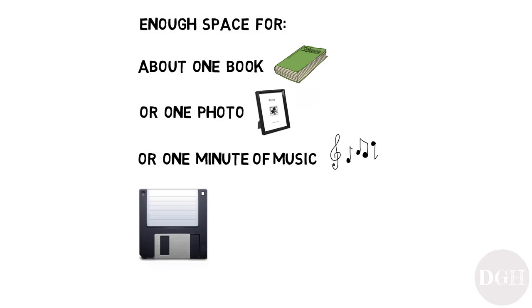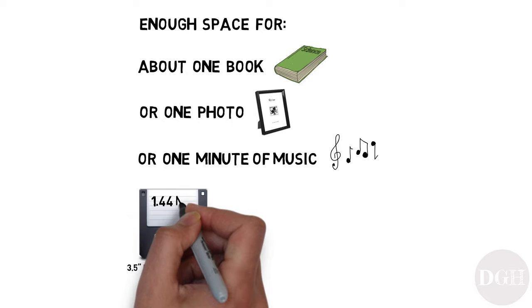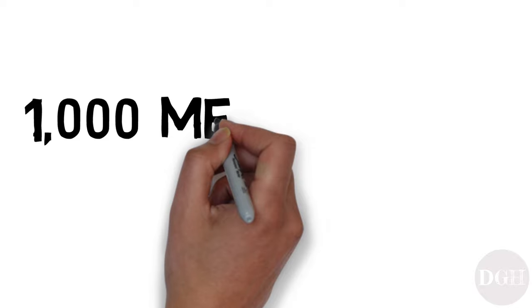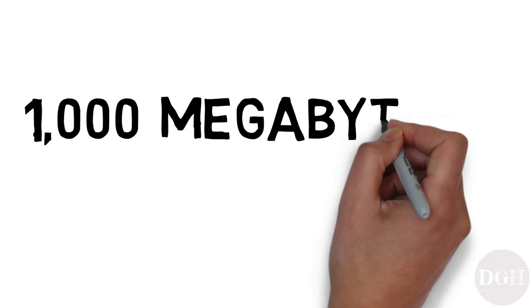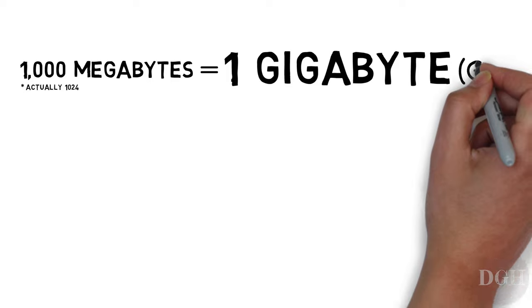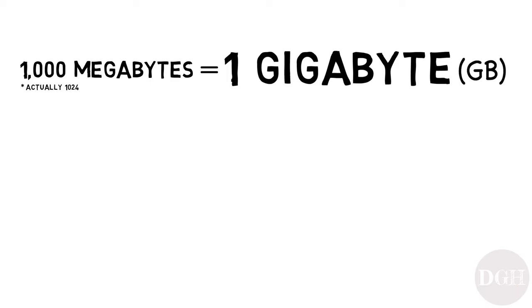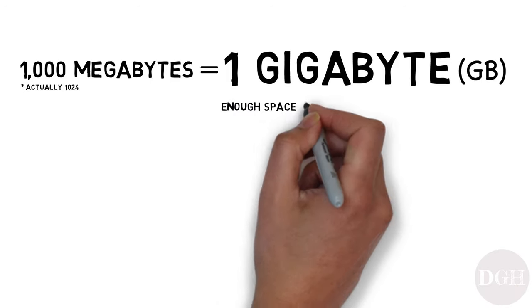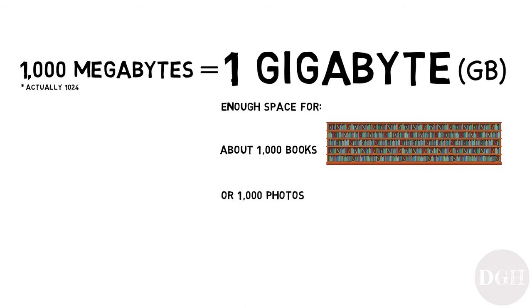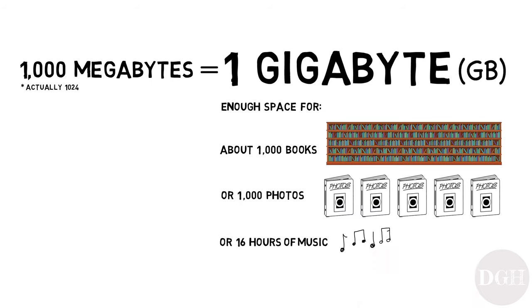The three-and-a-half-inch floppy disk, introduced in the 1980s, could hold 1.4 megabytes of data. A thousand megabytes is called a gigabyte, abbreviated as GB. A gigabyte is enough space to hold about a thousand books, a thousand photos, or 16 hours of music.